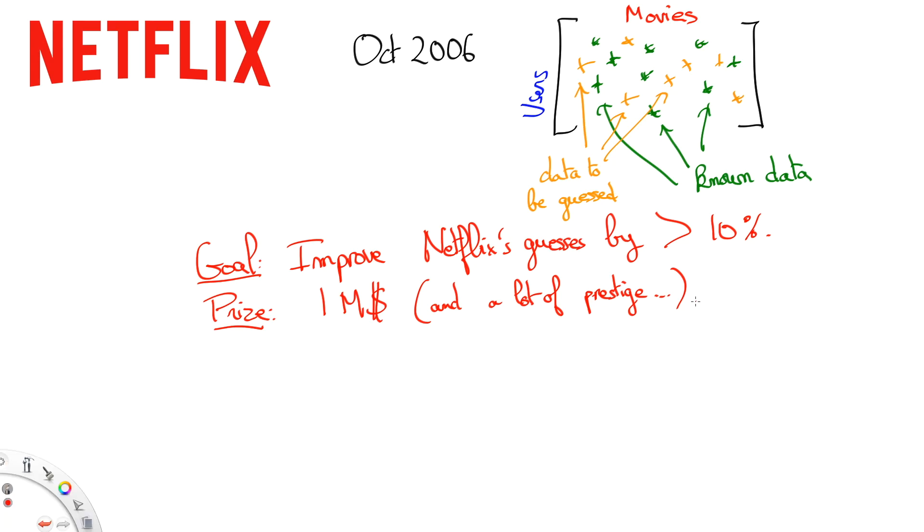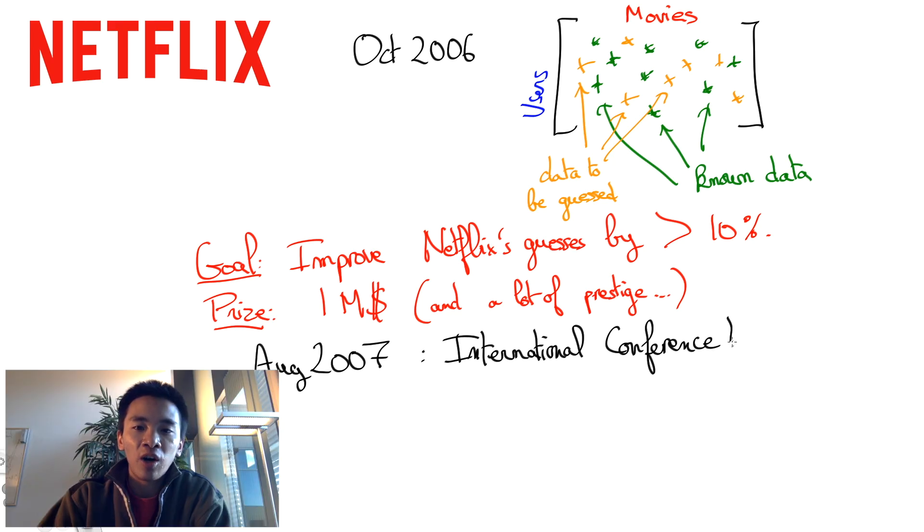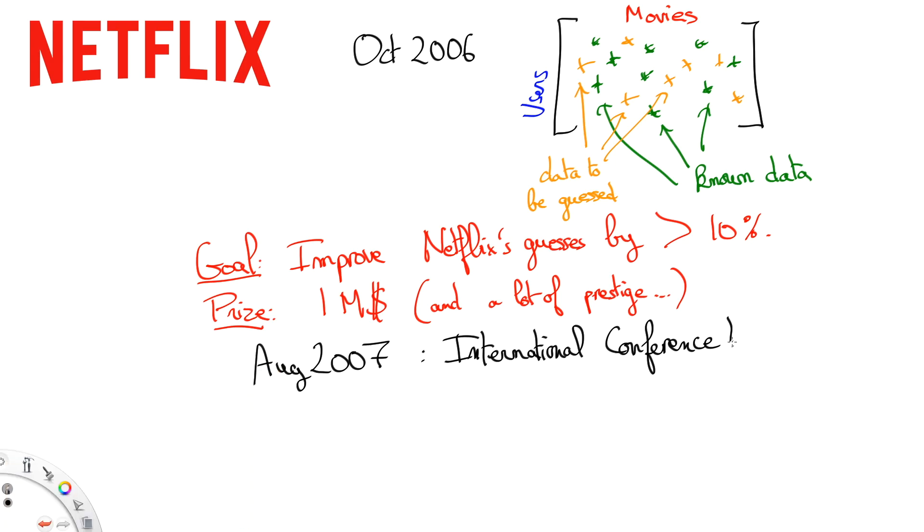In August 2007, a conference was set up. All four top teams of the competition were invited and presented their techniques. From this point on, even though the number of teams kept increasing, the Netflix Prize was to turn into a race between two leading teams: the Bellcore team from AT&T Labs and the Austrian Big Chaos team from Commander Research & Consulting.